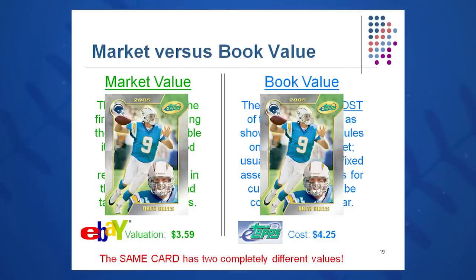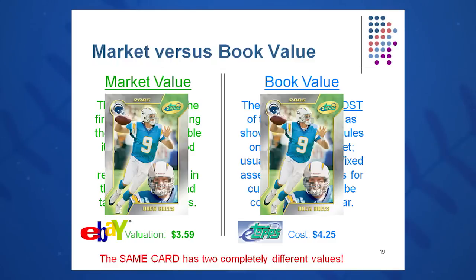Third, put on your market versus book value goggles. Book value generally means historic cost — assets are placed on the balance sheet at historic cost. Unfortunately, that doesn't tell you what the asset is worth in the market today. There is truly no fixed relationship between market and book value; they can vary widely over time. For example, a football card with a book value of $4.25 might sell for $3.59, $2, or even $60.